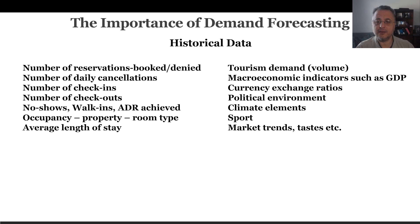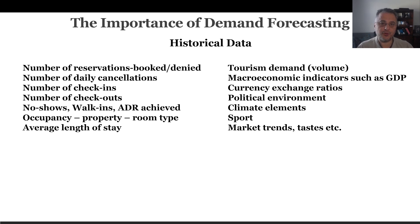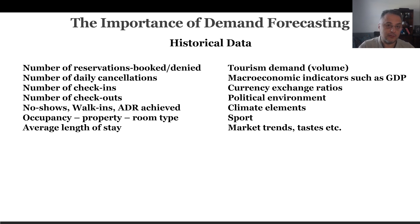Historical data, also known as actual or result data — why is it important? Because we assume that what happens in the past is a good indicator of what might happen in the future. What kind of data is available? For example, number of reservations booked or denied, number of cancellations. If we always have 5% cancellations in our reservations, we can maybe use that for overbooking, because we know 5% of people will cancel anyway.